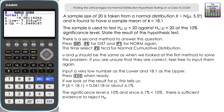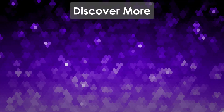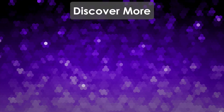Both methods — finding the critical region and comparing the probability to the significance level — confirm rejection of H₀ in favour of H₁. You may be asked specifically to find the critical region, but if given free choice, testing against the significance level using probability is also valid. Thanks for watching; don't forget to like and subscribe for future videos.